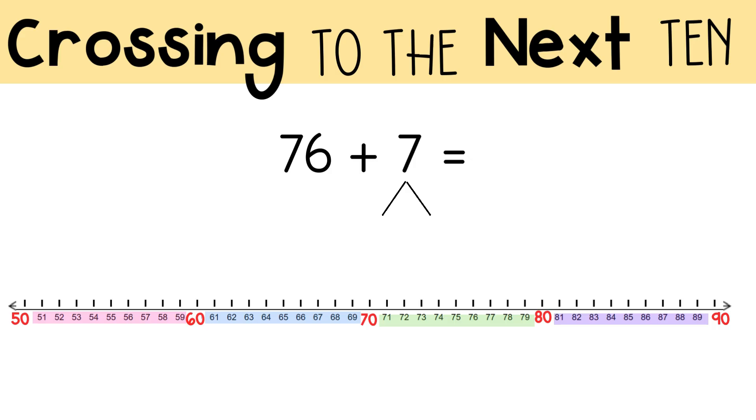The second part is how many more jumps you need to make a total of 7 jumps. Then write your sum based on the number you landed on. You can use the number line on the screen for help if you need it. Press pause while you solve, then press play. Press pause now.